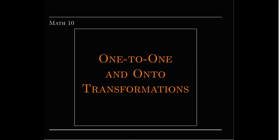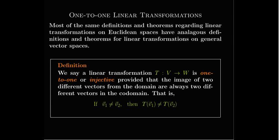In this short video, we're going to talk about one-to-one and onto transformations between general vector spaces. The definitions are essentially the same as when we had transformations between Euclidean spaces. We say that a transformation whose domain is a vector space V and co-domain is a vector space W is one-to-one, provided that whenever the inputs are different, their images are different.